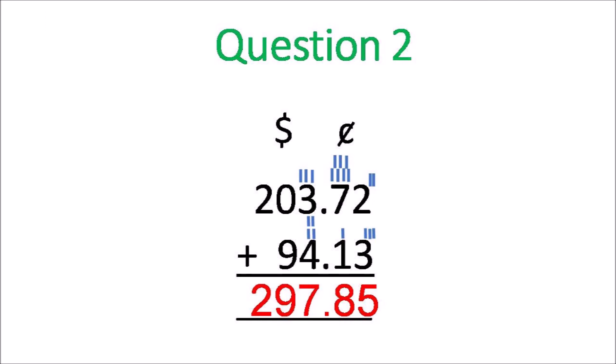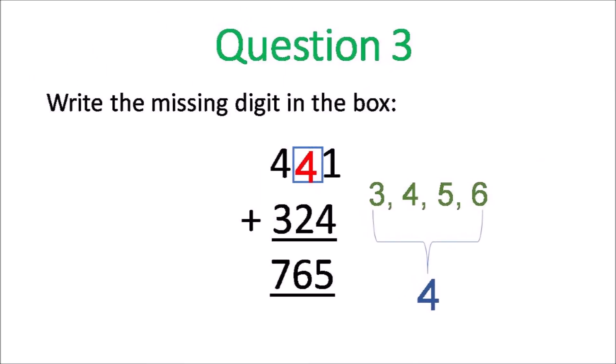Question 2. You can put your sticks down and then add: 3 and 2 is 5, 7 and 1 is 8, put the point, 4 and 3 is 7, 9 and 0 is 9, 2 and 0 is 2. 297 dollars and 85 cents.